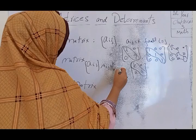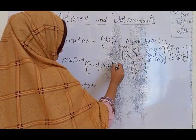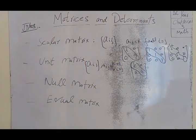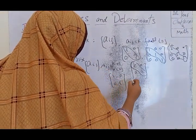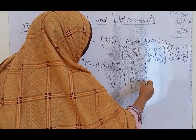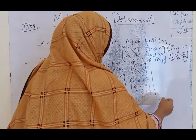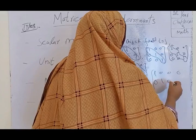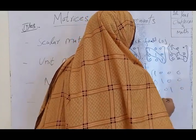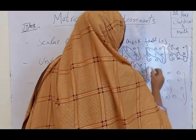In a scalar matrix, the principal diagonal entries are all equal to the same constant. If that constant is 1, such as the identity matrix with 1s on the diagonal and 0s elsewhere — for example the 2×2 identity with entries 1,0,0,1 — then it is called a unit matrix or identity matrix.